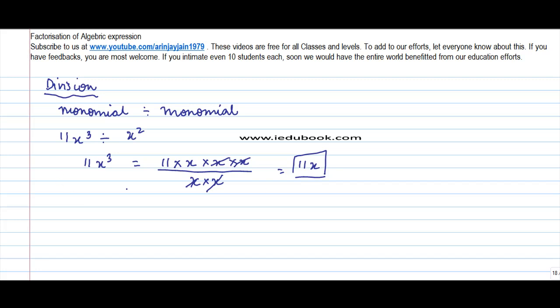The other way you could do this is to write it as 11x³/x², or 11 × x³/x², which equals 11x. We know that a^m/a^n = a^(m-n).